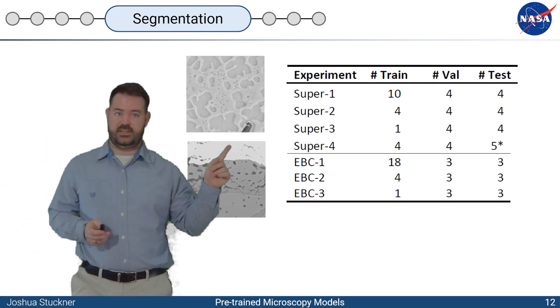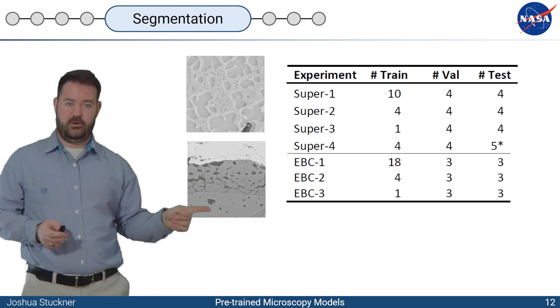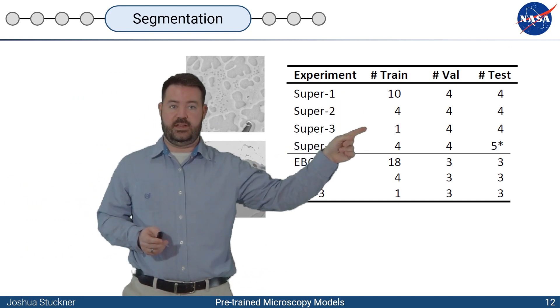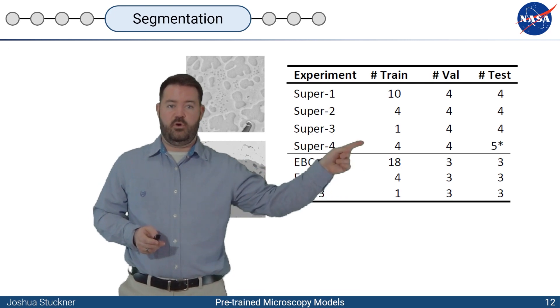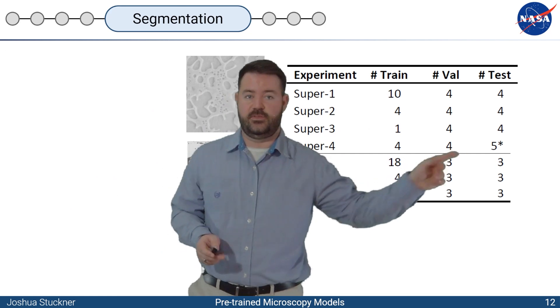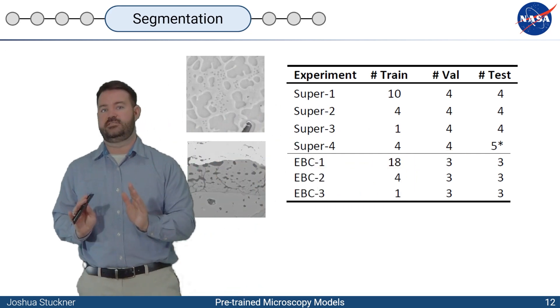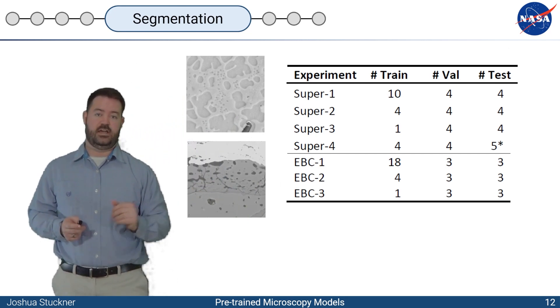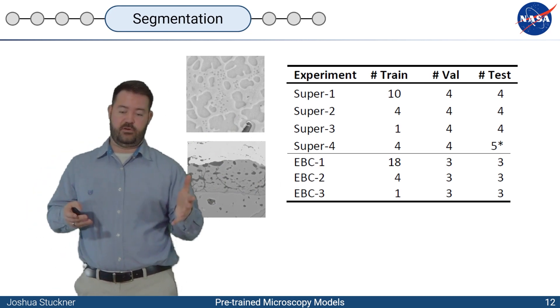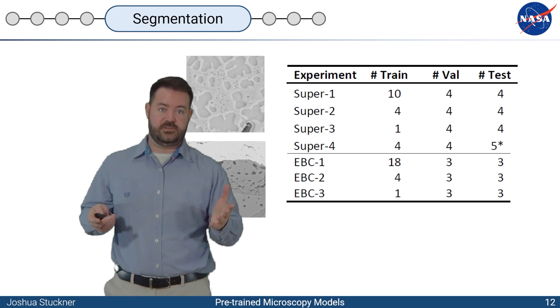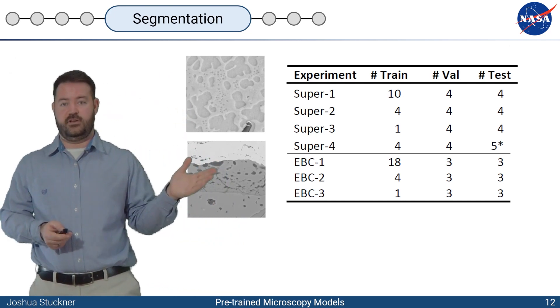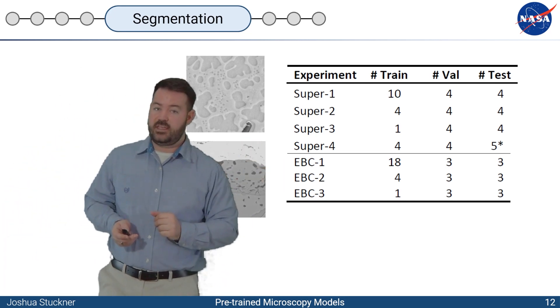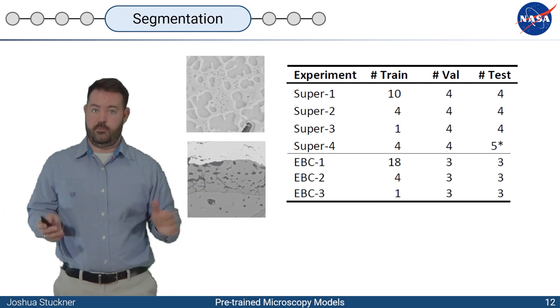So we tested on two different datasets. This is a nickel-based superalloy, and this is an environmental barrier coating with a thermally grown oxide here. And we did seven experiments. Six of them were with reducing the number of training data for our segmentation. And then one of them was for a completely different test set. So we wanted to see how robust the models were at out of distribution data, which is pretty common in microscopy images. Having models that are robust to out of distribution data can be extremely helpful. It makes the models more repeatable and more general, more shareable between research groups.